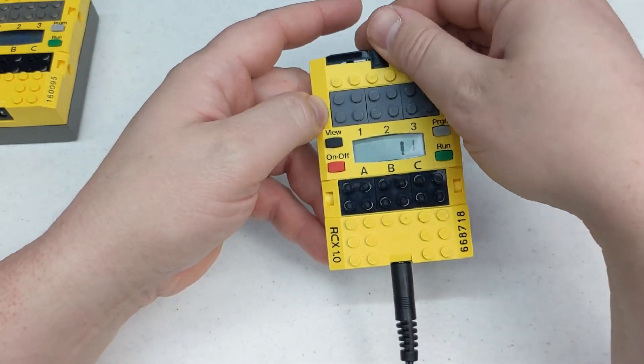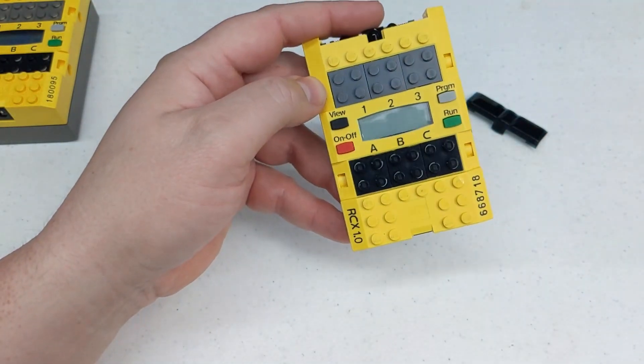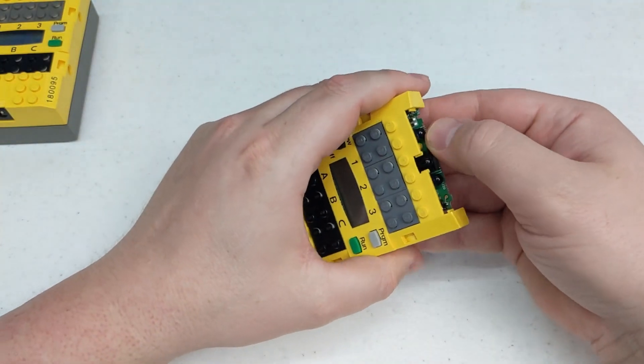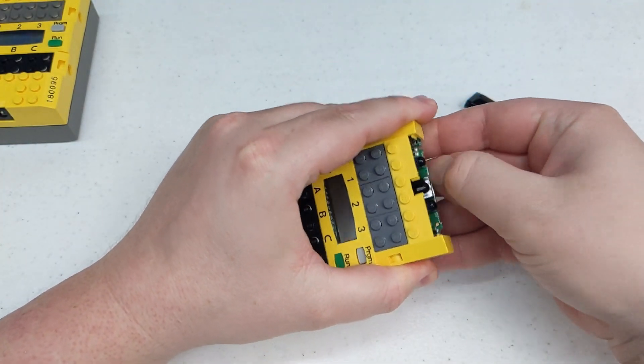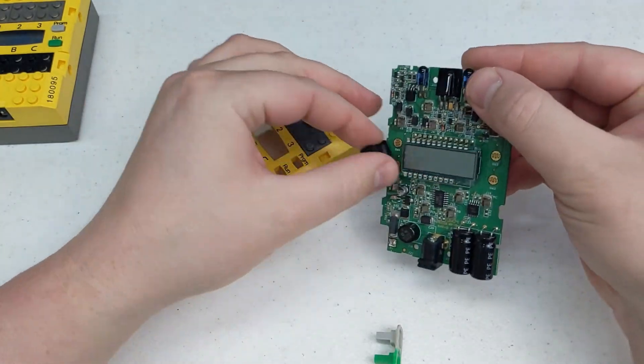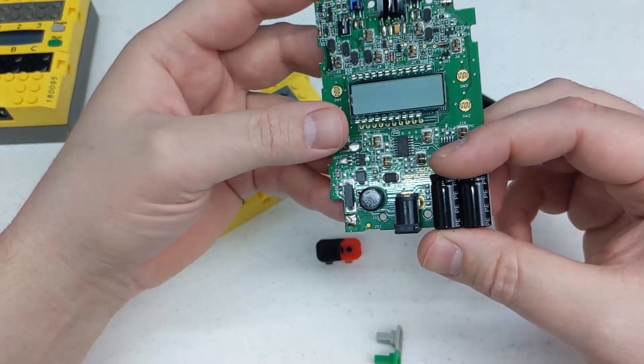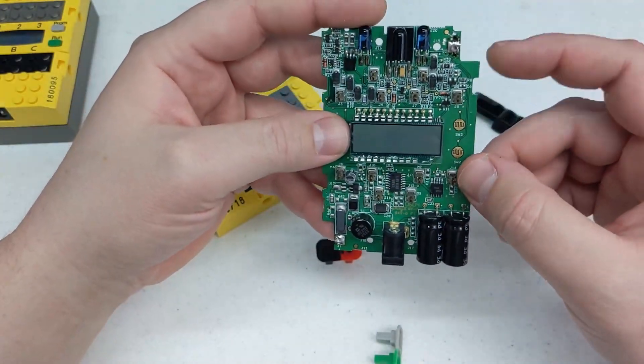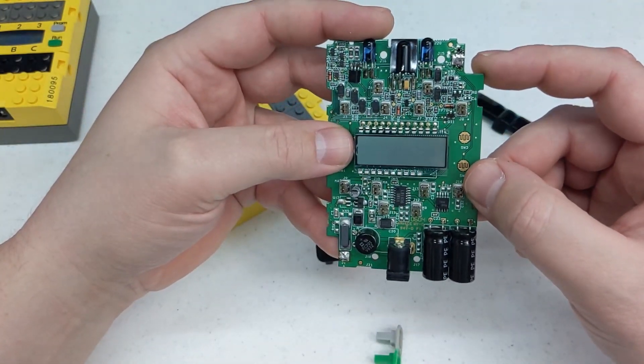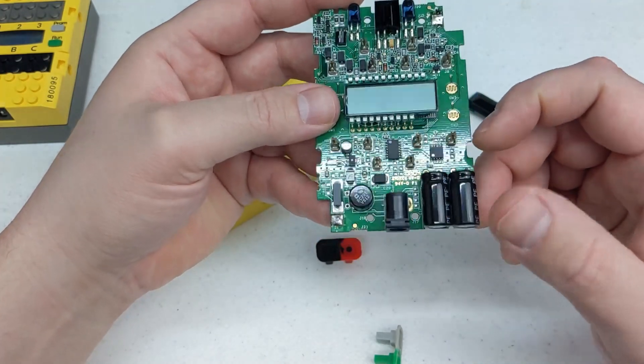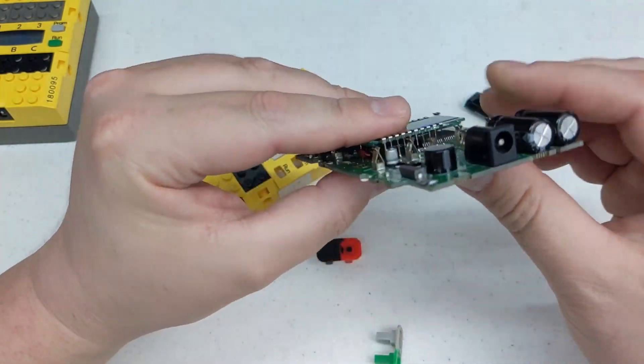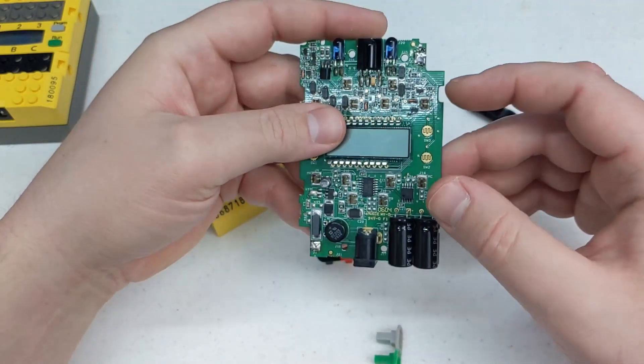So my initial theory was maybe something with the bridge rectifier, which is this guy right here. But, because that's what's strange, it actually, I used a 12-volt DC and it did power up. So now I'm kind of thinking maybe these capacitors need to be replaced.